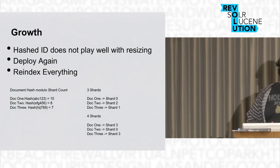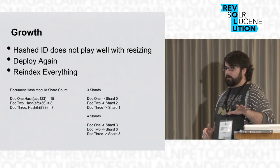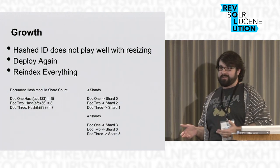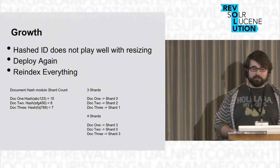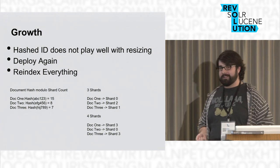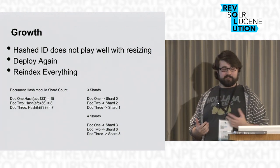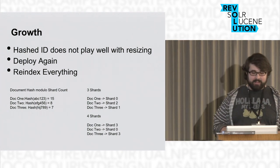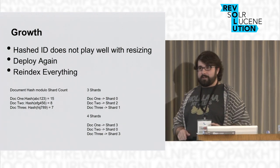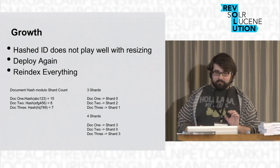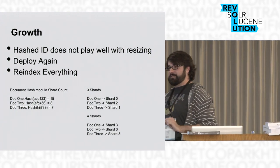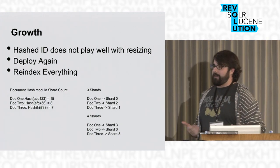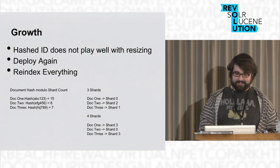From a growth angle, hashed IDs don't play well with resizing. The traditional approach was redeploy into a new cluster and reindex everything. When you're talking about 2 billion discrete results per client, my conversations with ops usually go: I say 'deploy me a new cluster, make it a bit bigger, reindex all the data, apply real-time updates to both so we don't take downtime — but don't make it too big because that slows things down.' They just stare at me, and I apologize a lot.